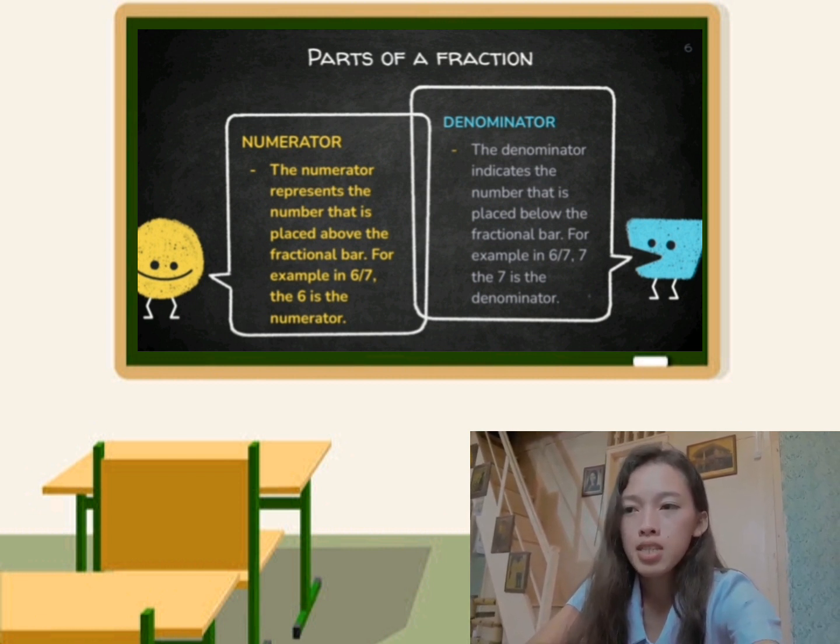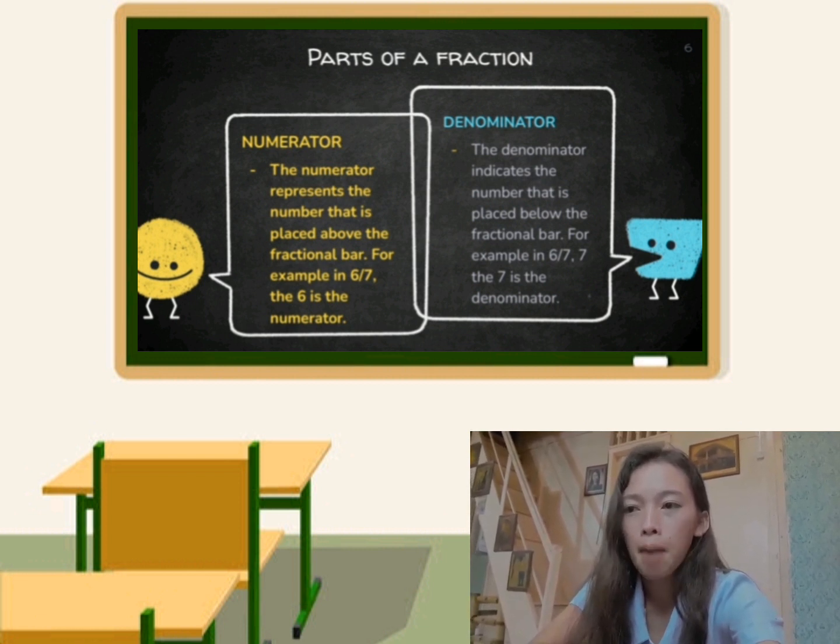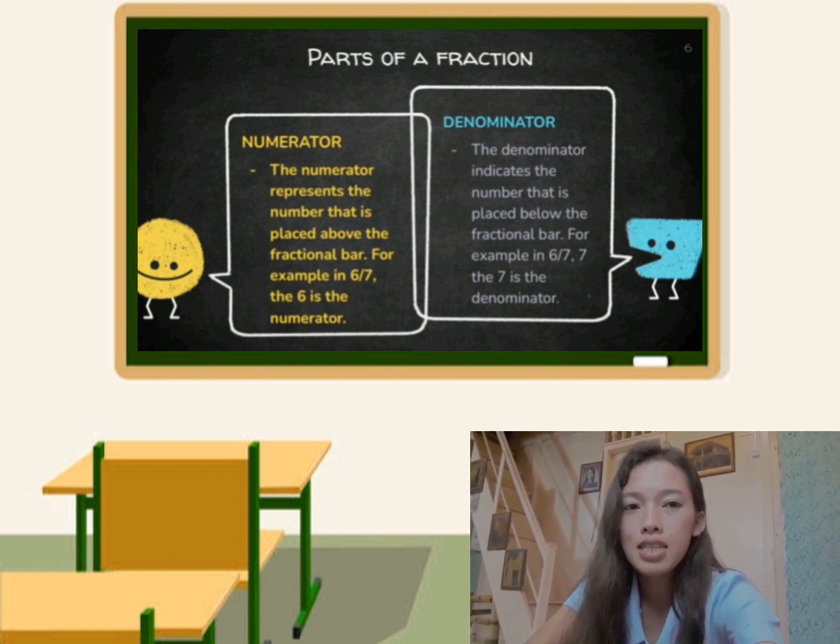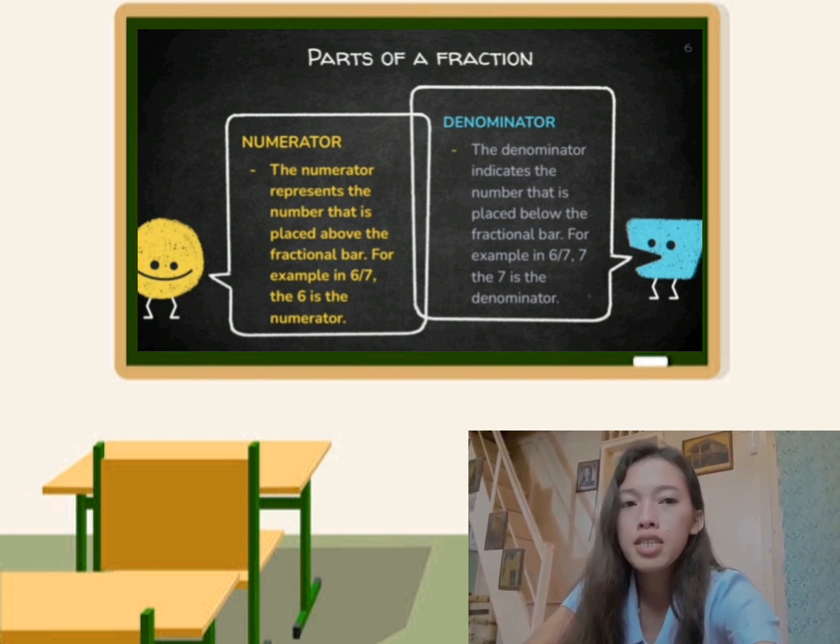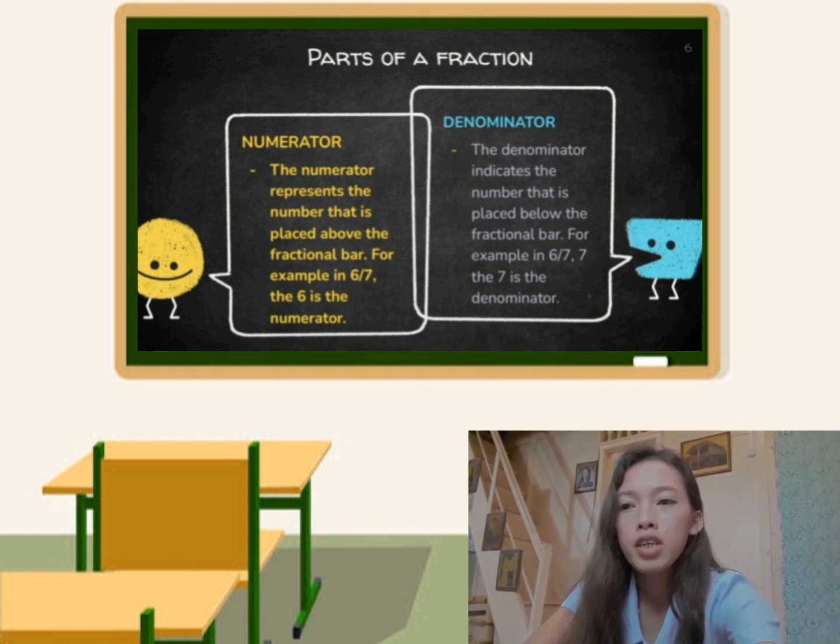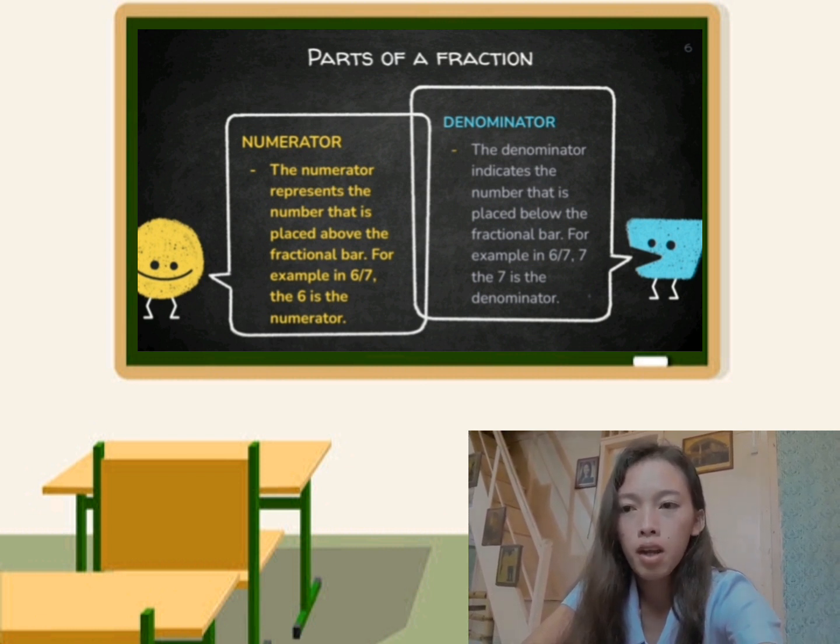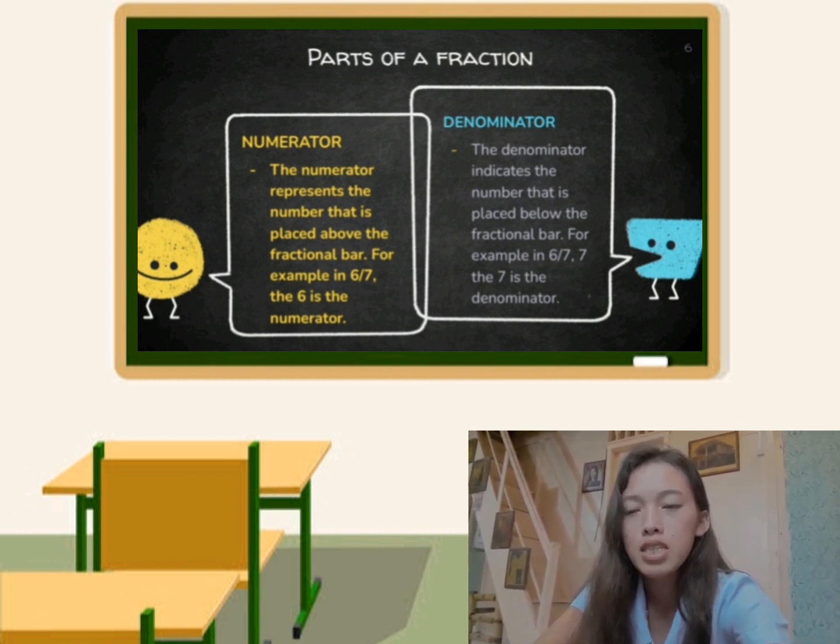The numerator represents the number that is placed above the fractional bar. For example, in 6 over 7, the 6 is the numerator. The denominator indicates the number that is placed below the fractional bar. For example, in 6 over 7, the 7 is the denominator.